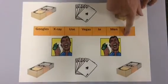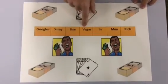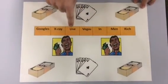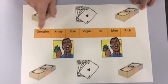So rich stands for radio, men stands for micro, in stands for infrared, Vegas visible light, use ultraviolet, x-ray obviously is x-ray and finally goggles is gamma.